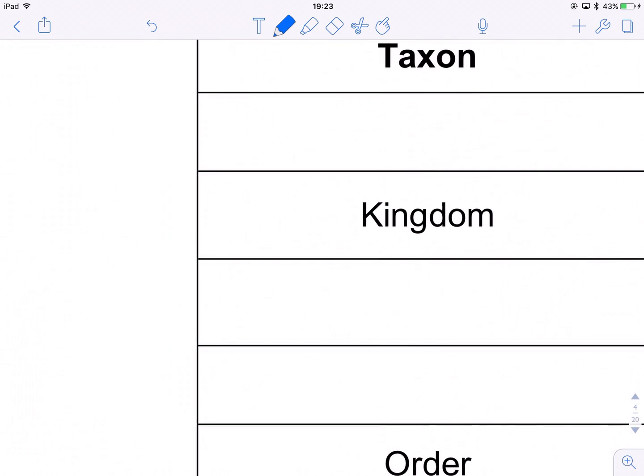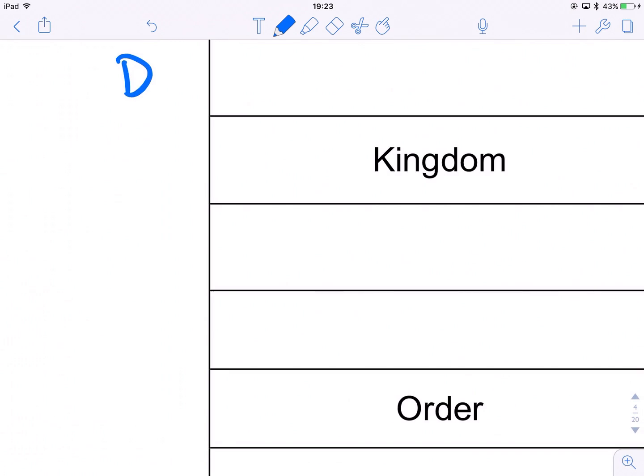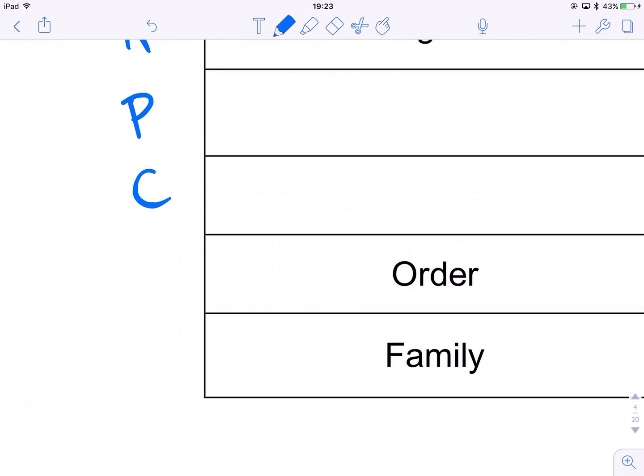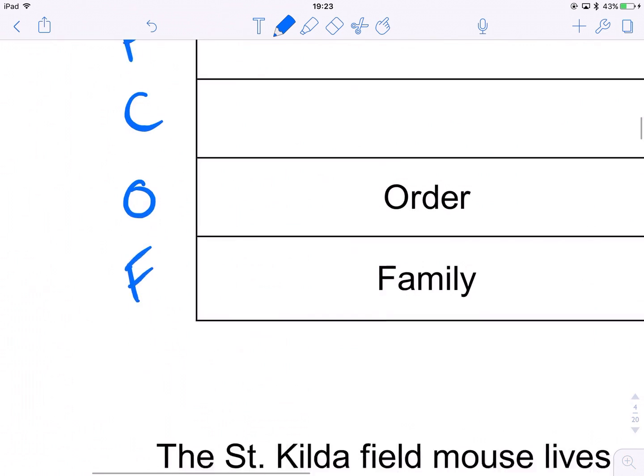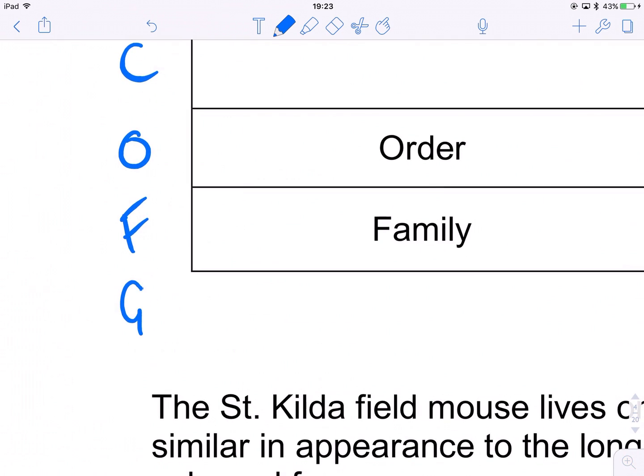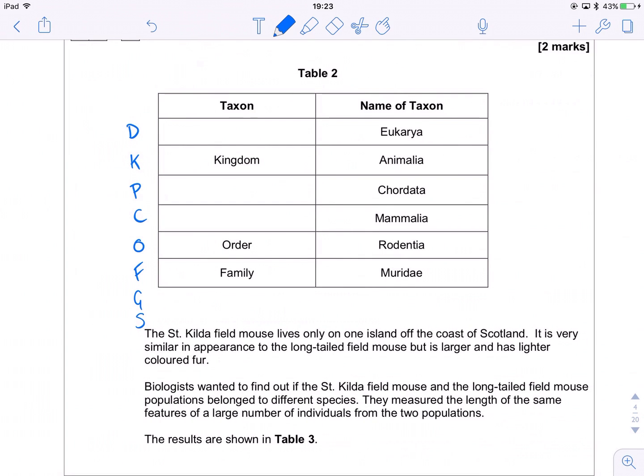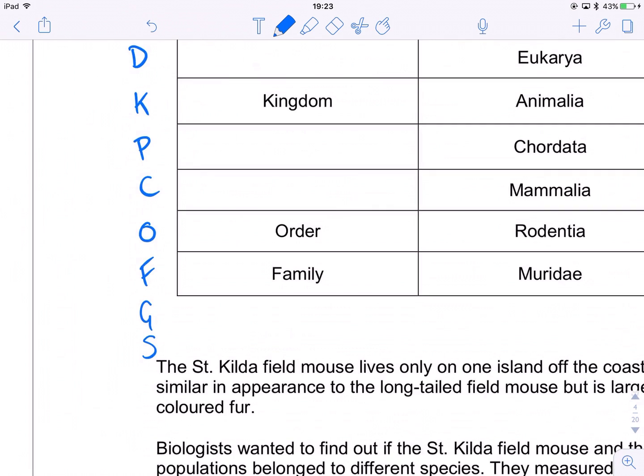So, a little acronym to remember, or an acrostic however you want to say it: D, K, P, C, O, F, and then G, S. So we can go for a nice little acrostic to remember this. Did King Philip come over for group sex? Who knows? He might have done. So did King Philip come over for group sex? And that will help us remember the order of these different taxons.